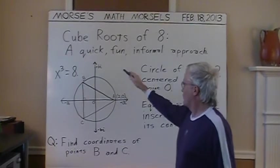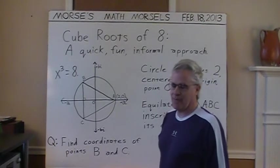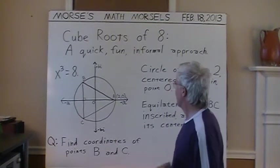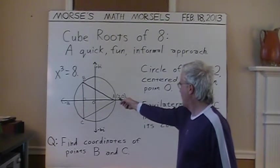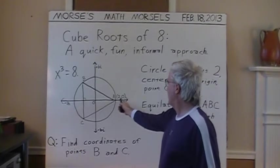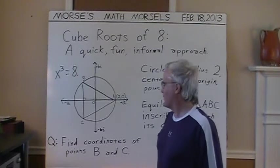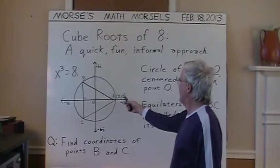Anyhow, the cube roots of eight. One of the roots, as everybody knows, is two because two times two times two is eight. So I'm able to plot one point, which I called A, at two comma zero. So the a value is two and two is just a plain old real number. So that's two comma zero.